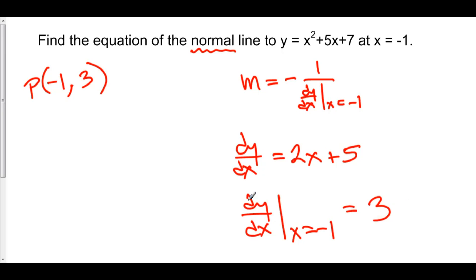If the slope of the tangent line is 3, then the slope of our normal line is -1/3.